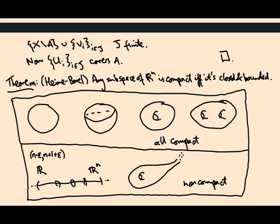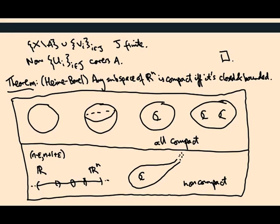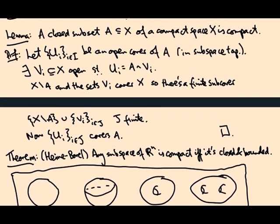Interestingly, if you wanted to prove the Heine-Borel theorem, notice that by this previous lemma that a closed subset of a compact space is compact, it's sufficient to prove that a cube in R^n, a closed cube, is compact.